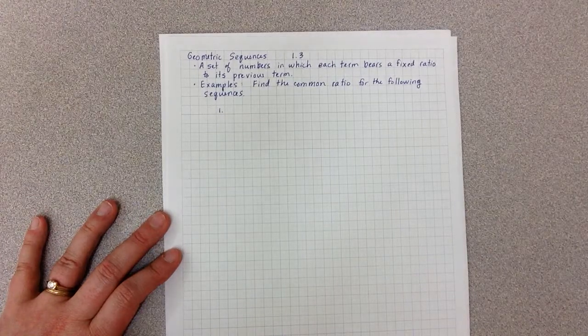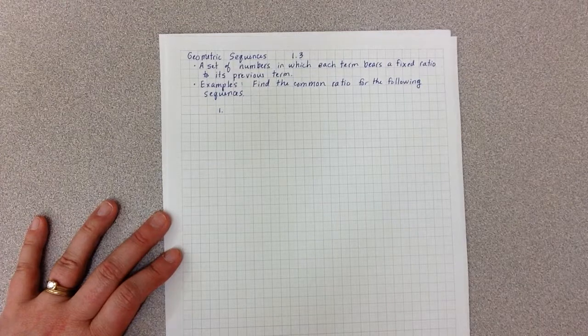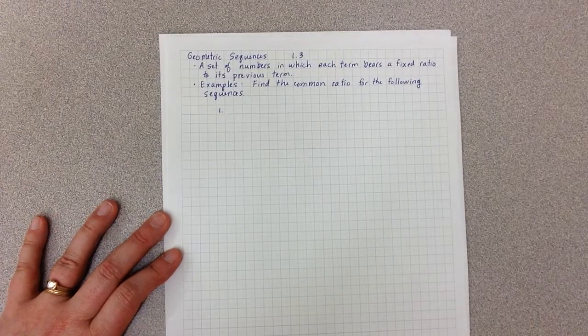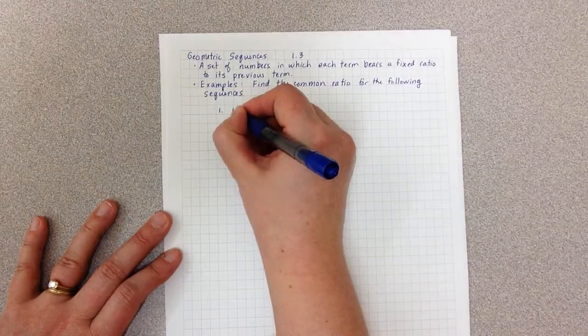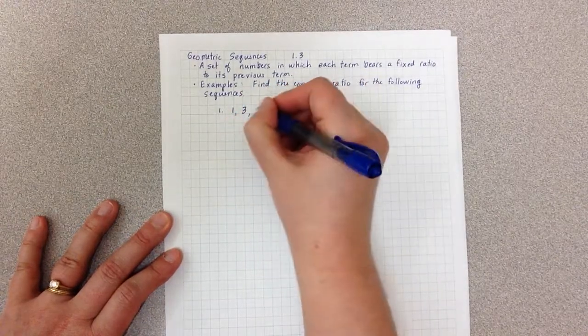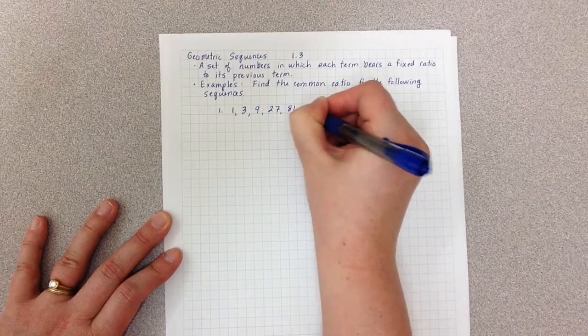We're going to look at a couple examples to understand what that definition means. In these examples we're going to find the common ratio for the following sequences. Our first example is the sequence 1, 3, 9, 27, 81, etc.